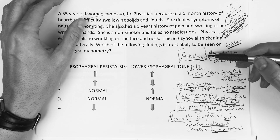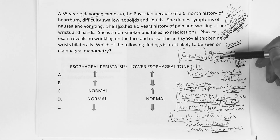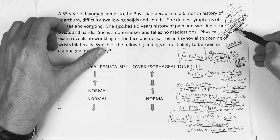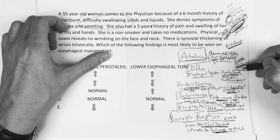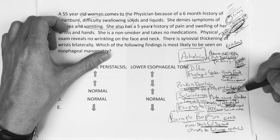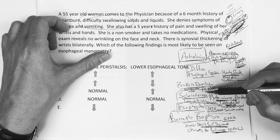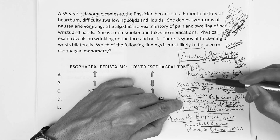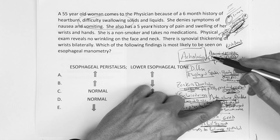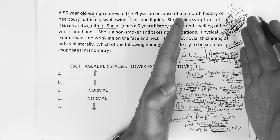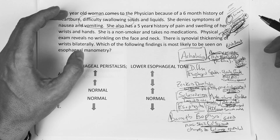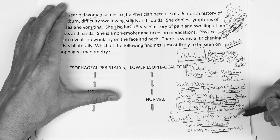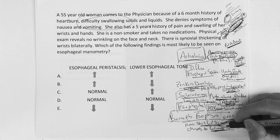In review: achalasia — absence of peristalsis, high tone, no relaxation, Trypanosoma cruzi, bird's beak, myenteric plexus of the muscularis. Diffuse esophageal spasm — young female, chest pain, corkscrew. Zenker's — proximal esophageal outpouching, bad breath. Scleroderma — autoimmune, fibroblasts, loss of distal peristalsis; atrophy versus achalasia's high tone. Esophagitis — immunocompromised. Barrett's — GERD, stratified squamous changes to columnar epithelium.